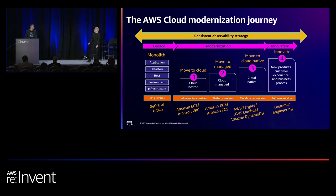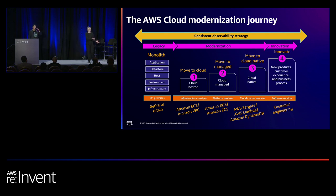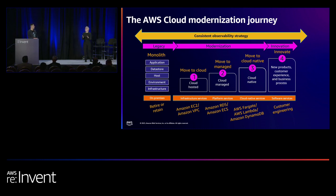I think it's interesting — we tend to look at organizations as homogeneous, like 'you're at stage one, stage two,' but even within organizations, even within groups themselves, you'll have a dichotomy of where they're at from a modernization point of view. Some customers are working with stage zero — we all have to start somewhere.